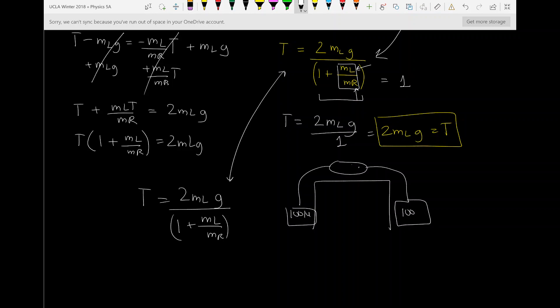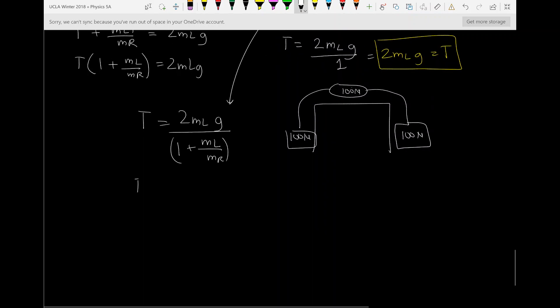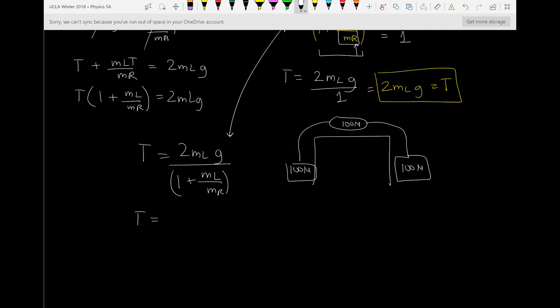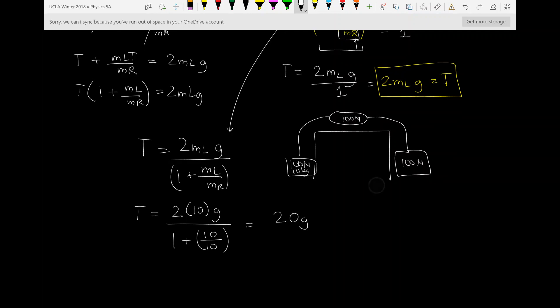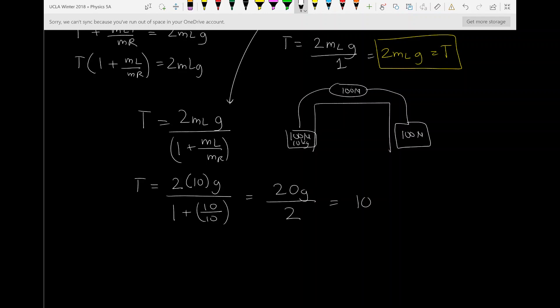And our intuition was completely wrong. But the answer we know from both class and from similar problems is, the spring here should be reading 100 newtons for each object's force. Let's check that out using our math. If it's 100 newtons, that means it's 10 kilograms. So let's do that. 2 times 10 G divided by 1 plus 10 over 10. This gives me 20 G over 2, which equals 10 G, which equals roughly 100 newtons.